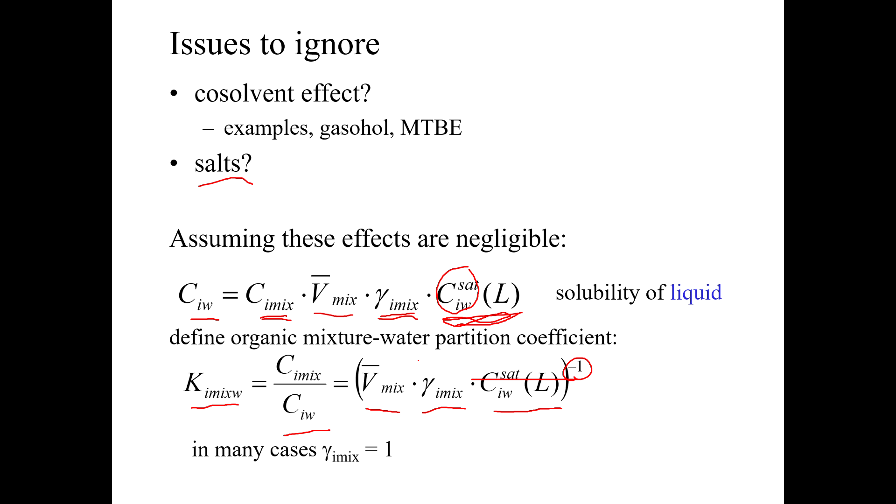And in many cases again, we've said that this gamma_mix could be assumed to be equal to 1. And this, I might not know what it is, but I do know it's constant. So the activity coefficient, excuse me, the equilibrium constant is roughly a function of the solubility in water.